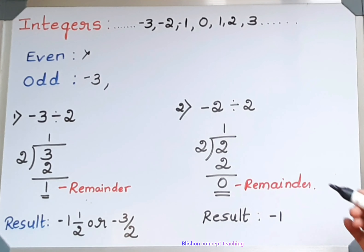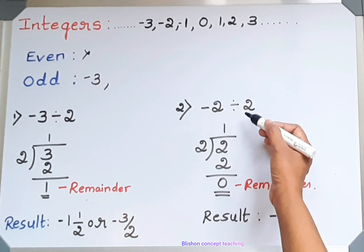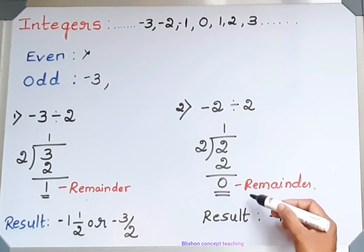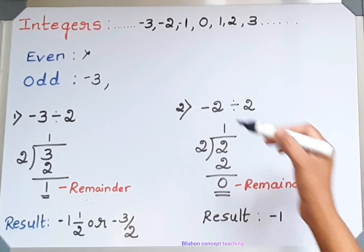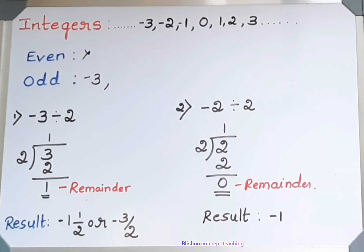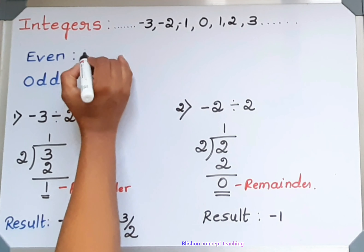I have divided minus 2 by 2 and you can see here the remainder is 0. Minus 2 is exactly divided by 2. According to the definition of even number, it is an integer and it is exactly divided by 2. So minus 2 is an even number.